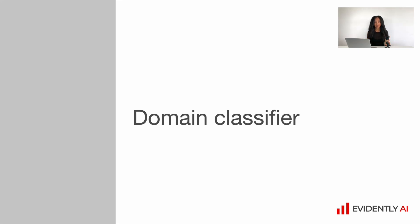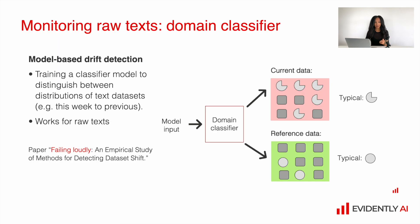The first strategy to assess data quality and detect data shifts is the domain classifier. The idea is very interesting. Imagine you have a lot of text data and you create some reference dataset where you are sure that the text looks exactly as you planned, and your models and other data processing systems work well on top of those texts. Then you receive a new batch of raw text data.